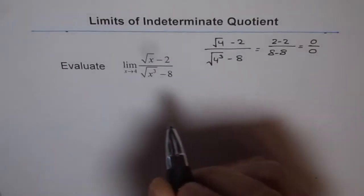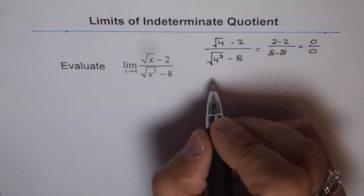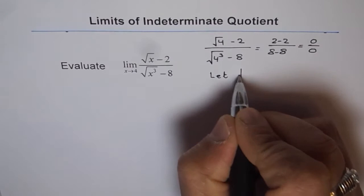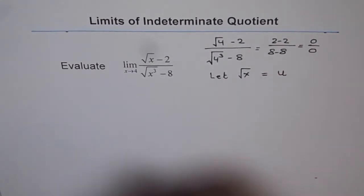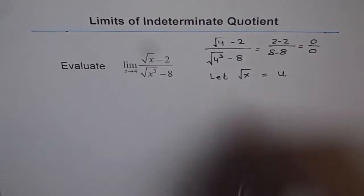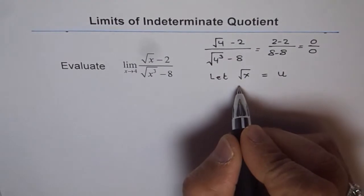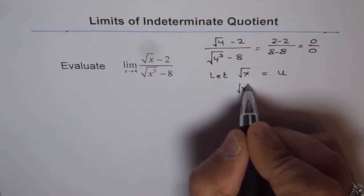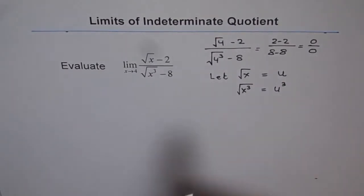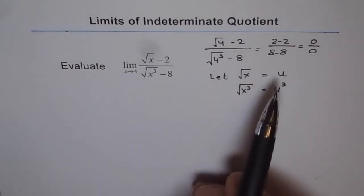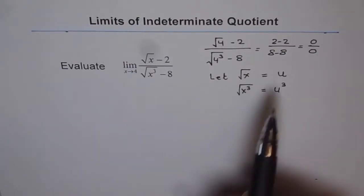So what we will do is substitute square root of x with another variable. Let square root of x equal some variable u. In that case, what will square root of x cubed be? Square root of x cubed will be equal to u cubed. So we can replace square root of x with u and square root of x cubed with u cubed.